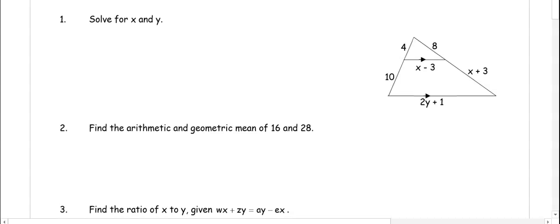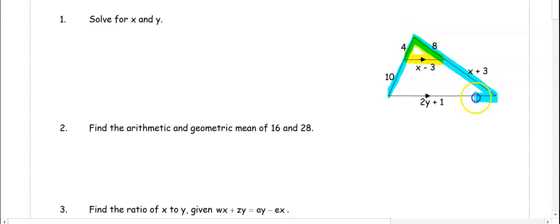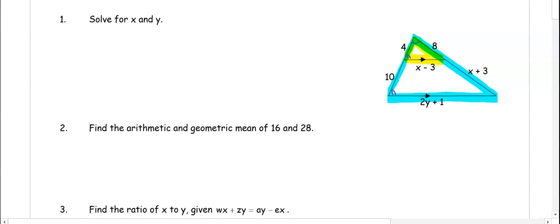In number one, we want to solve for x and y. Notice that there are two triangles here — a little triangle and then a bigger triangle around it. We know that these triangles are similar because the lines are parallel, so corresponding angles are congruent, and the shared angle is congruent.